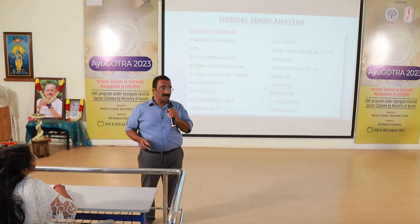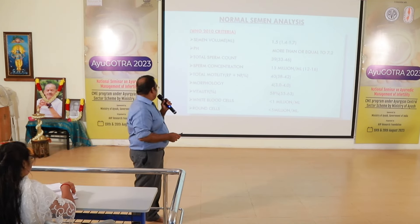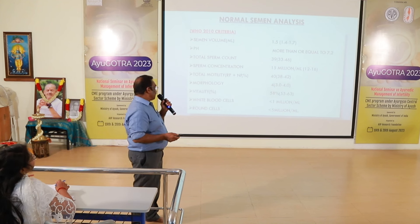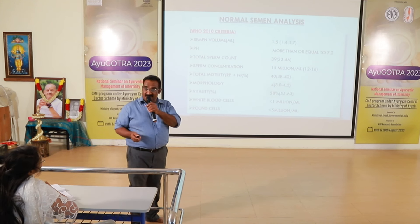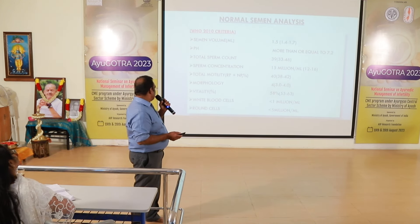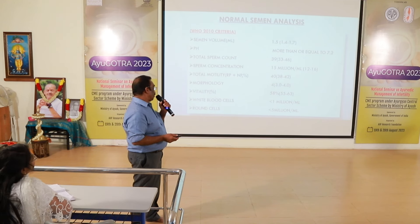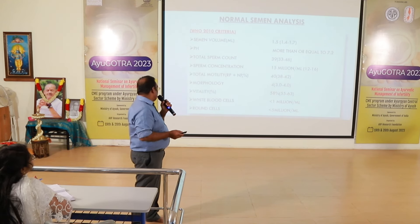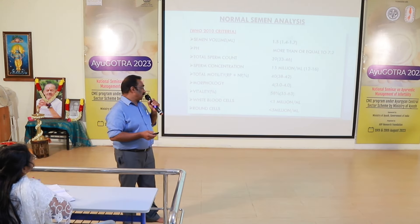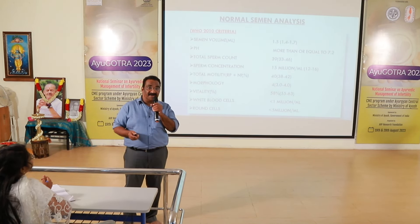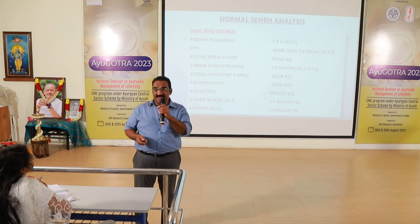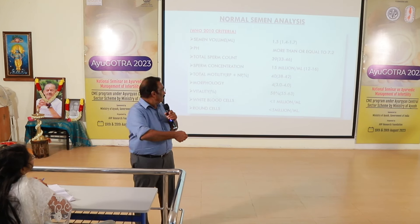Then morphology — at least for vitality, whether sperm are live or not. At least 58% vitality is expected. WBC should be less than 1 million per ml. Round cells should be less than 5 million per ml. It is very difficult to differentiate between round cells and WBC.